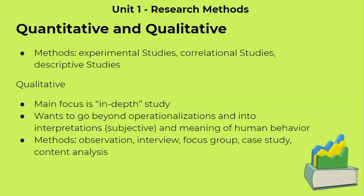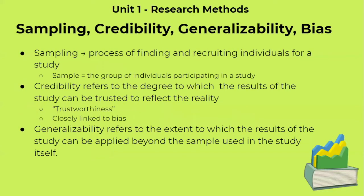Now on to qualitative research. The main focus is in-depth study — finding novel information that may differ from person to person, going beyond operationalizing variables into interpretations of subjective material, since human behavior is varied across populations. Methods under qualitative research include naturalistic observations, where we observe humans or animals in their natural environment, as well as interviews, focus groups, case studies focusing on one or few individuals in depth, and content analysis of pre-existing psychological studies.